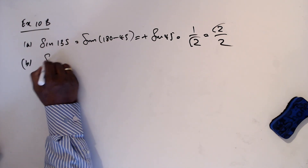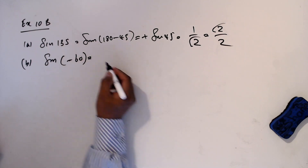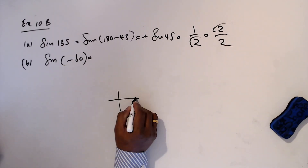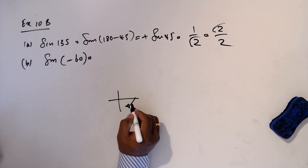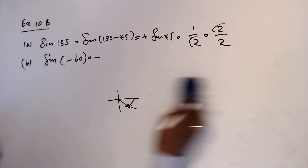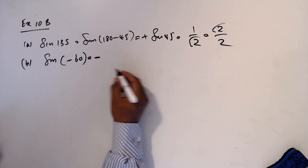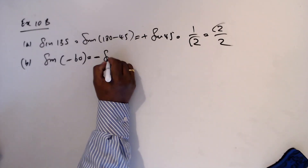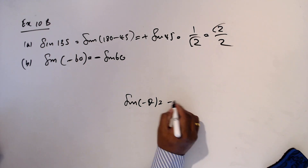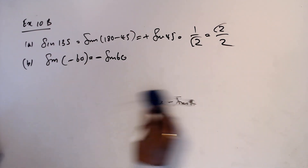B: sine minus 60. In which quadrant? Negative 60 degrees is in the fourth quadrant, measured from here. So the answer is negative. Using the identity sine(minus theta) equals minus sine(theta).